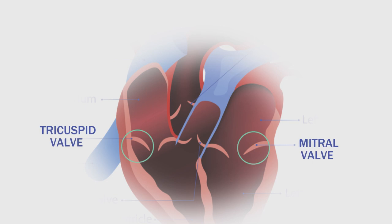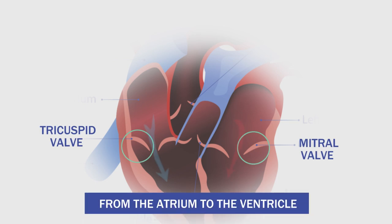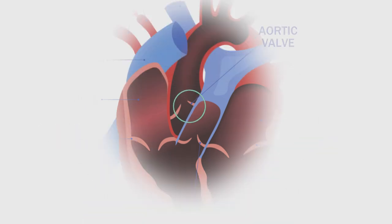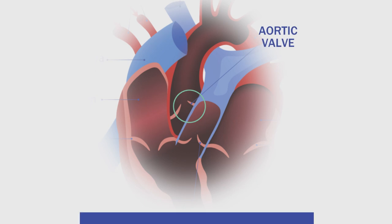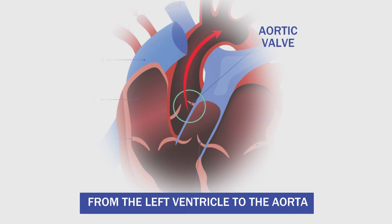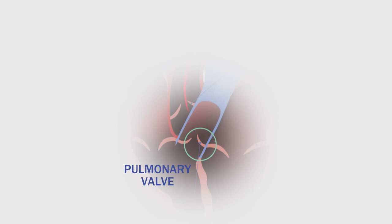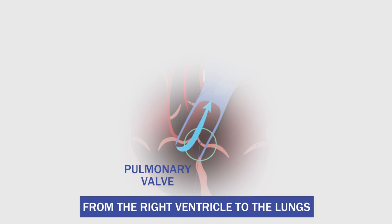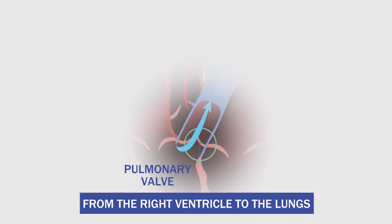The tricuspid and mitral valves regulate the blood flow from the atrium to the ventricle. The aortic valve is responsible for blood flow from the left ventricle to the aorta. Finally, the pulmonary valve regulates the blood flow from the right ventricle to the lungs.